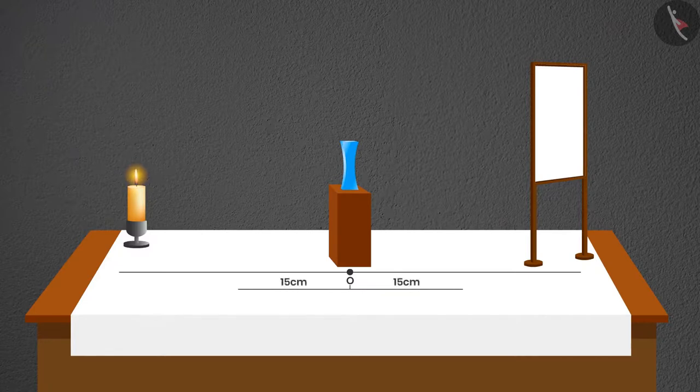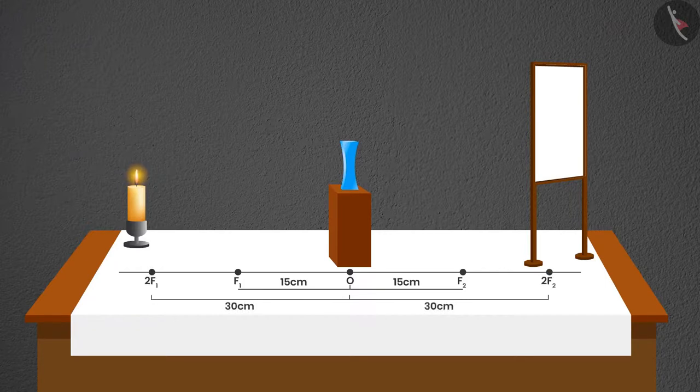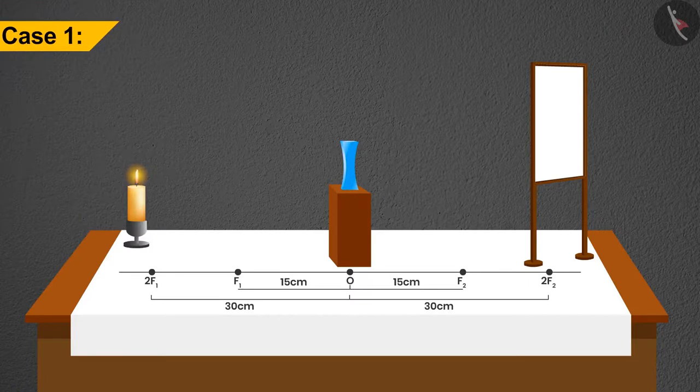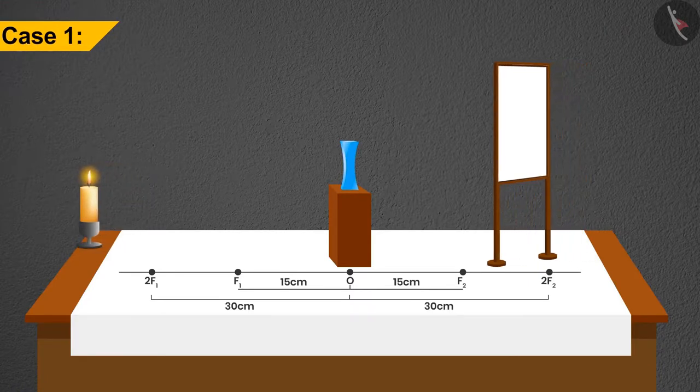F1 and F2 should be inscribed at a distance of 15 cm from O, and 2F1 and 2F2 at a distance of 30 cm. In the first case, let's put the candle at infinity. Do we see any image on the screen?